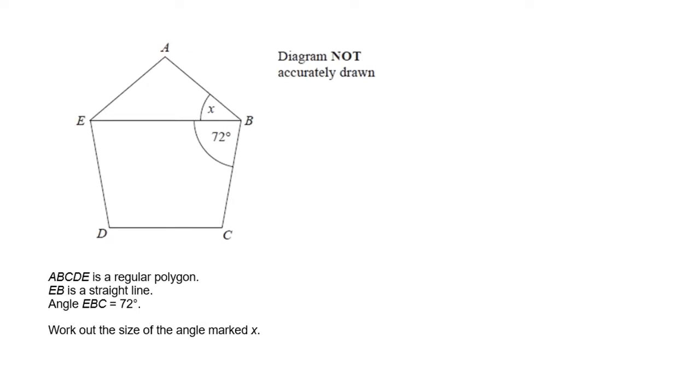And the next one. Again, the thing to notice here, it says that the shape here, A, B, C, D, E, is a regular polygon. Regular means all the sides are the same, and the angles at A, B, C, D, and E are all going to be the same. So that's the clue, and you're given one of the angles, which is the 72 degrees. So see if you can work out what X is.